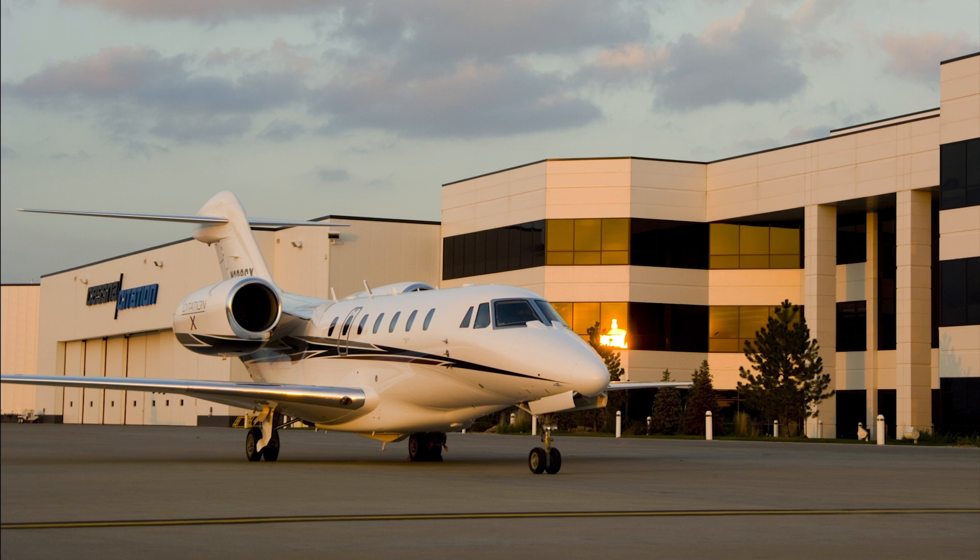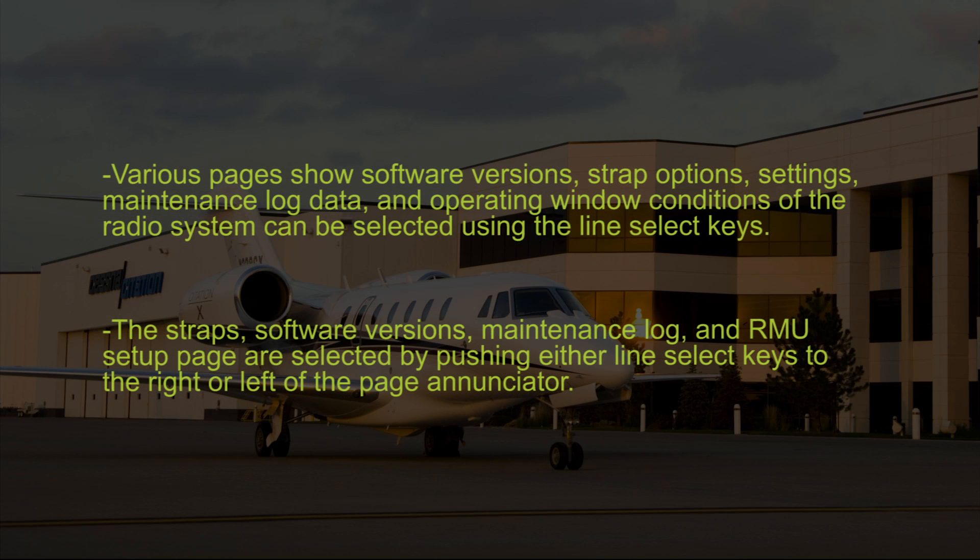The maintenance data menu page on the RMU can only be displayed with the aircraft on the ground, weight on wheel switch engaged. Various pages that show software version, strap option, settings, maintenance log data, and operating window condition of the radio system can be selected using the line select key. The strap, software version, maintenance log, and RMU setup page are selected by pushing either the line select key to the right or left of the page enunciator.